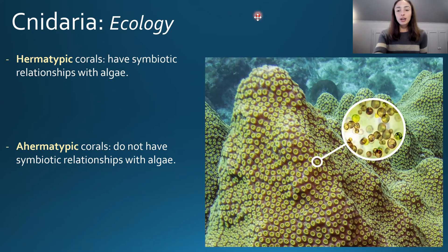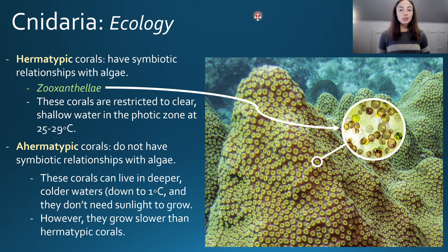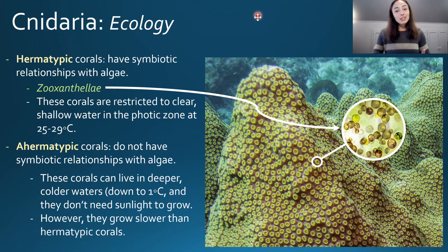Corals can live either with or without a symbiotic relationship with algae. Hermatypic corals contain algae called zooxanthellae inside their polyps and are restricted to clear, shallow water in the photic zone because the algae needs sunlight to photosynthesize. Ahermatypic corals can live in deeper, colder waters down to one degree Celsius and don't need sunlight, though they grow slower. The algae is thought to provide some kind of energy or growth boost to hermatypic corals.